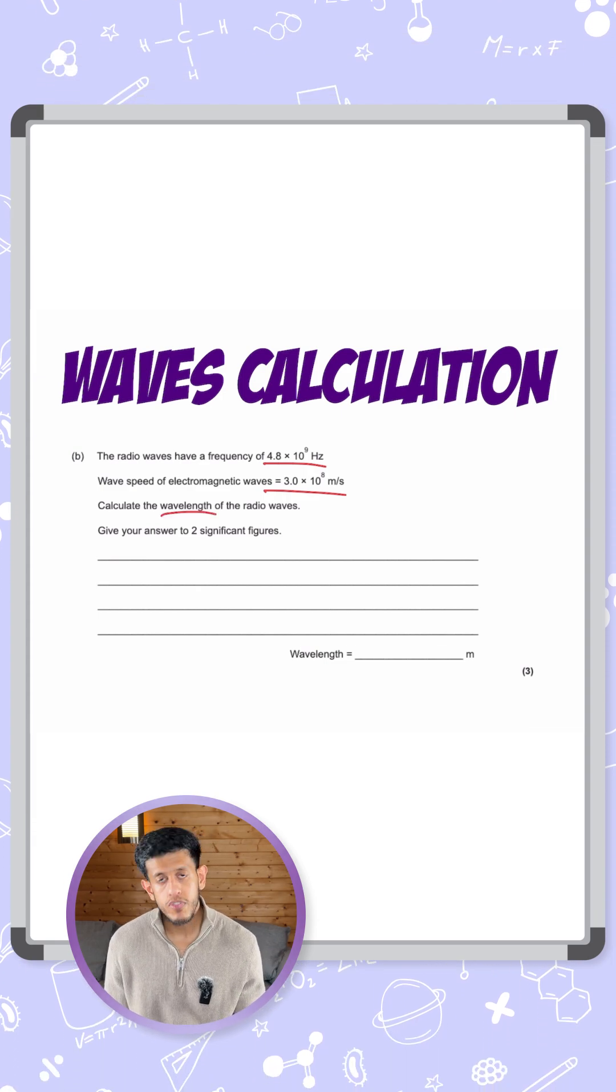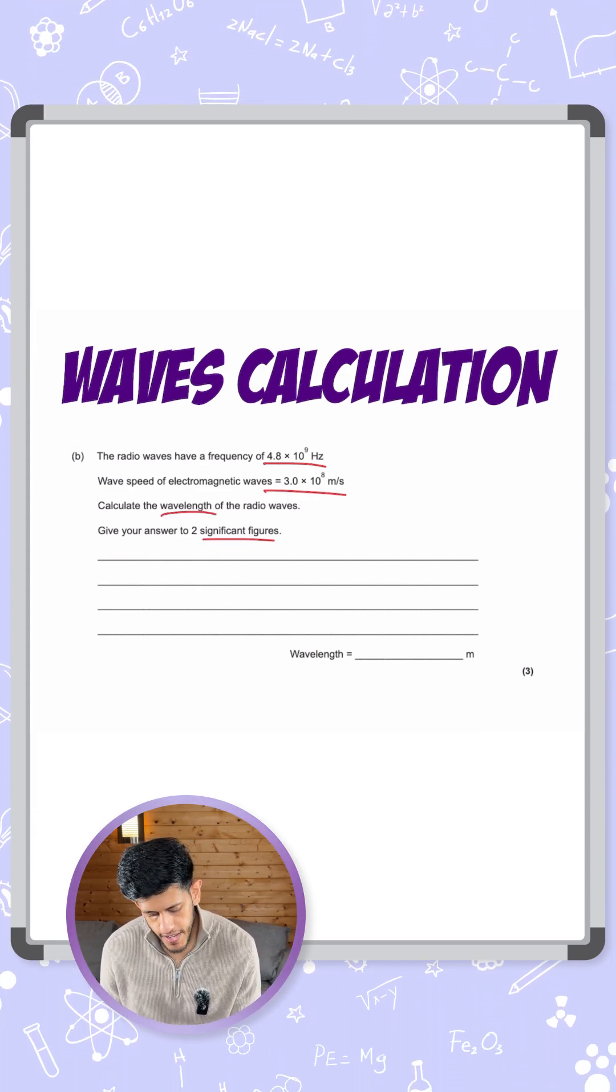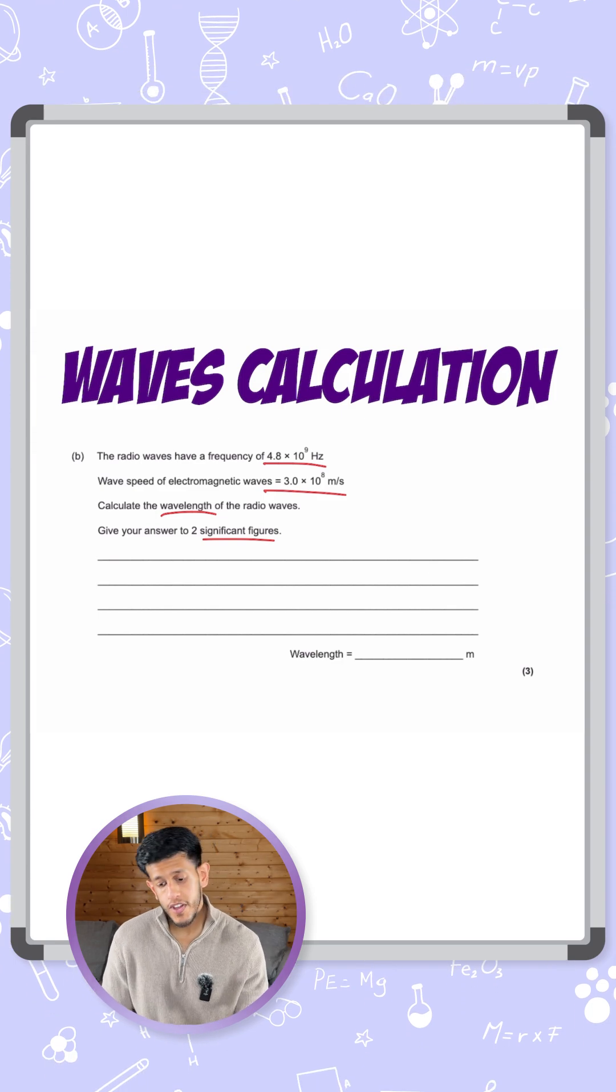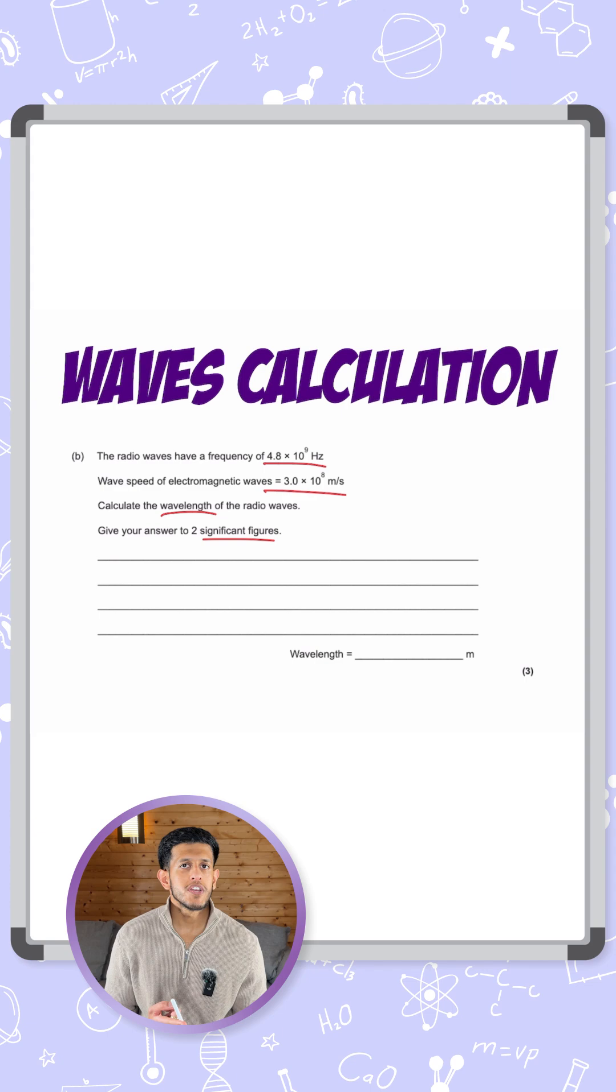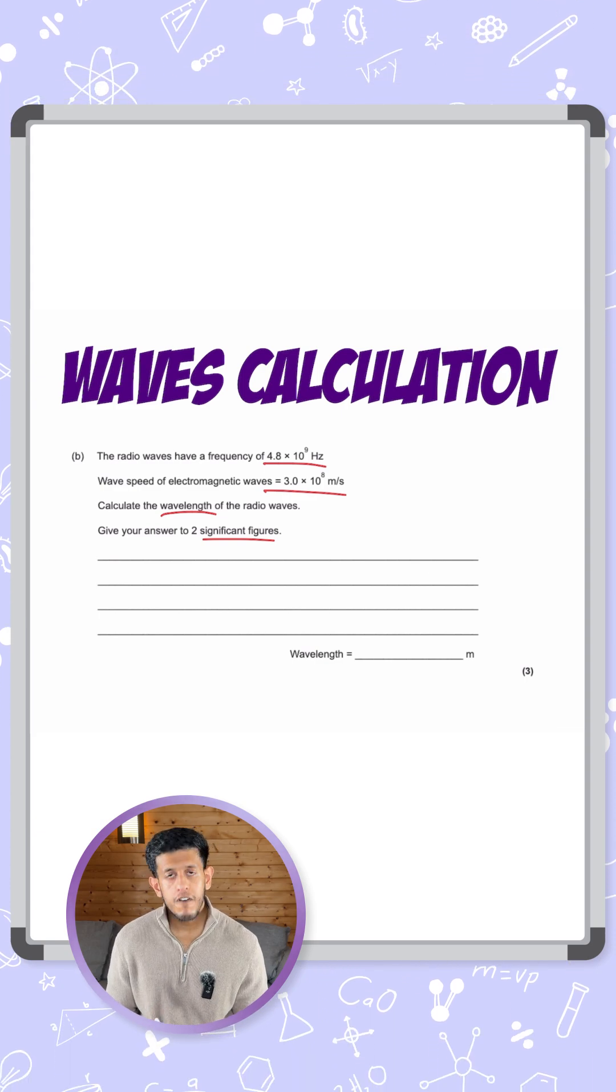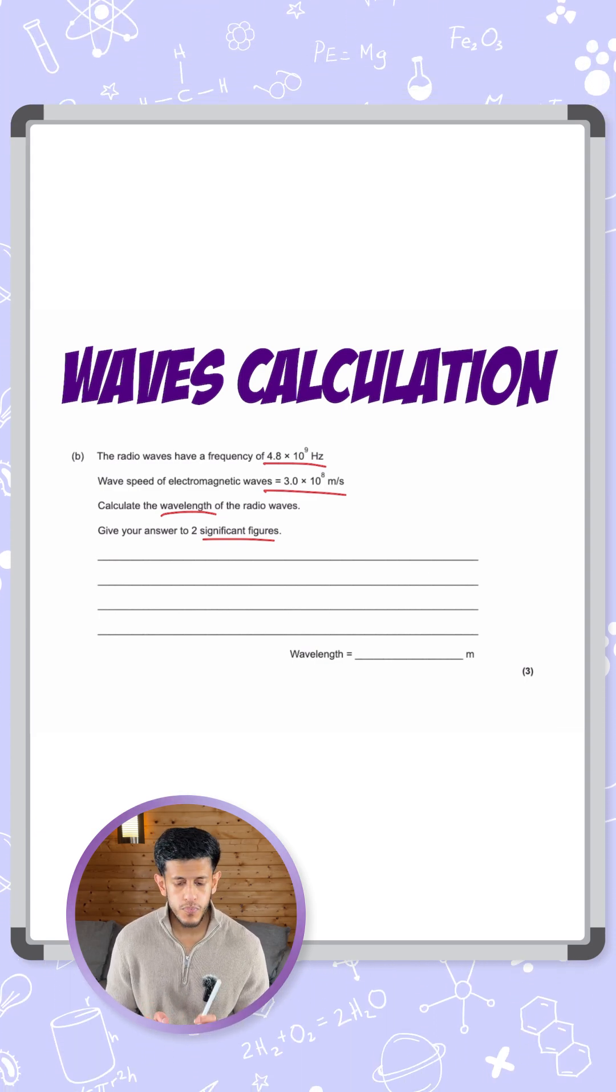Calculate the wavelength of the radio waves. Give your answer to two significant figures. So we need to first write down the equation, substitute in the numbers, and then put in the value. So one mark for the equation, one mark for the value, and one mark for giving it to two significant figures. We can't forget that.